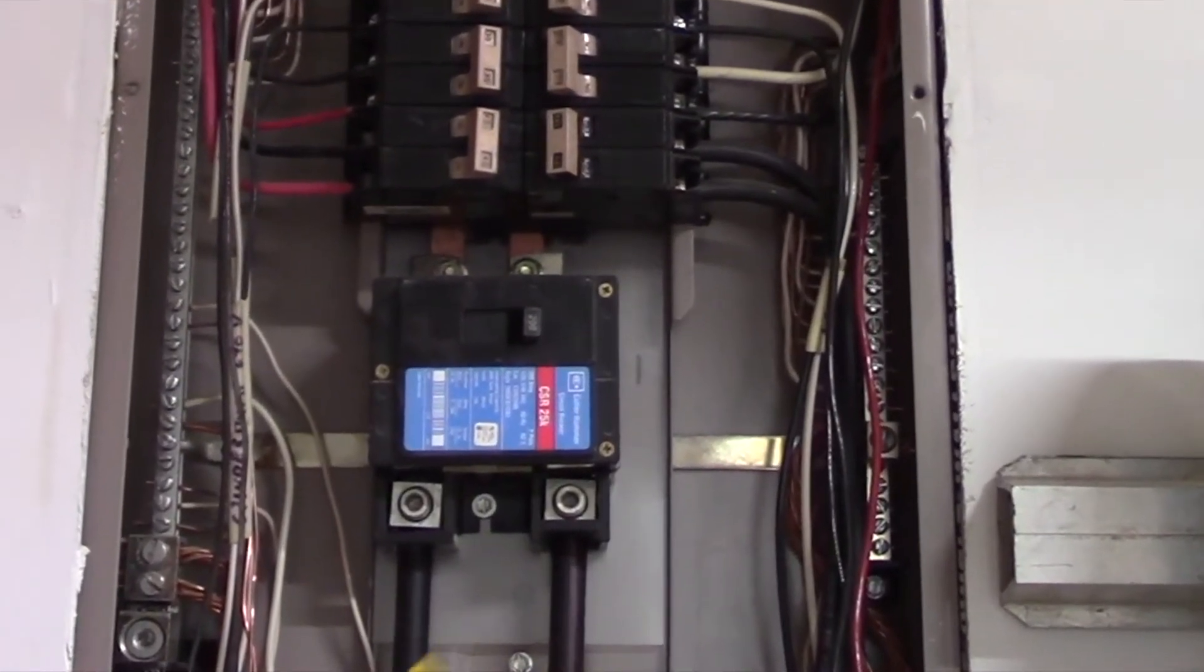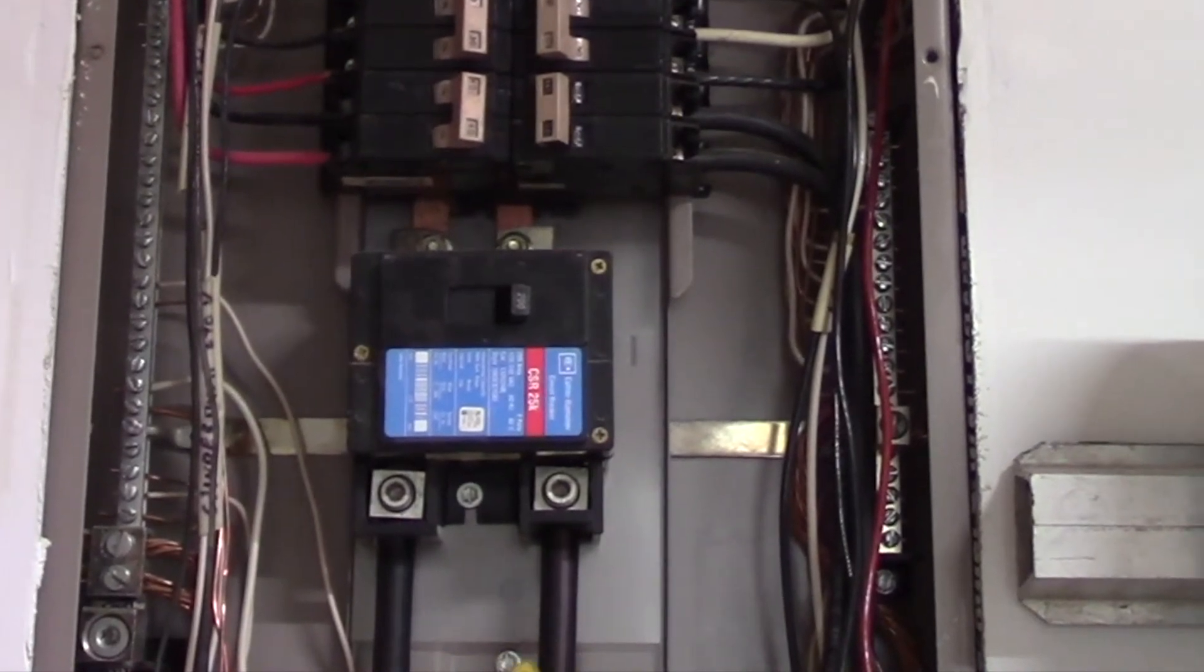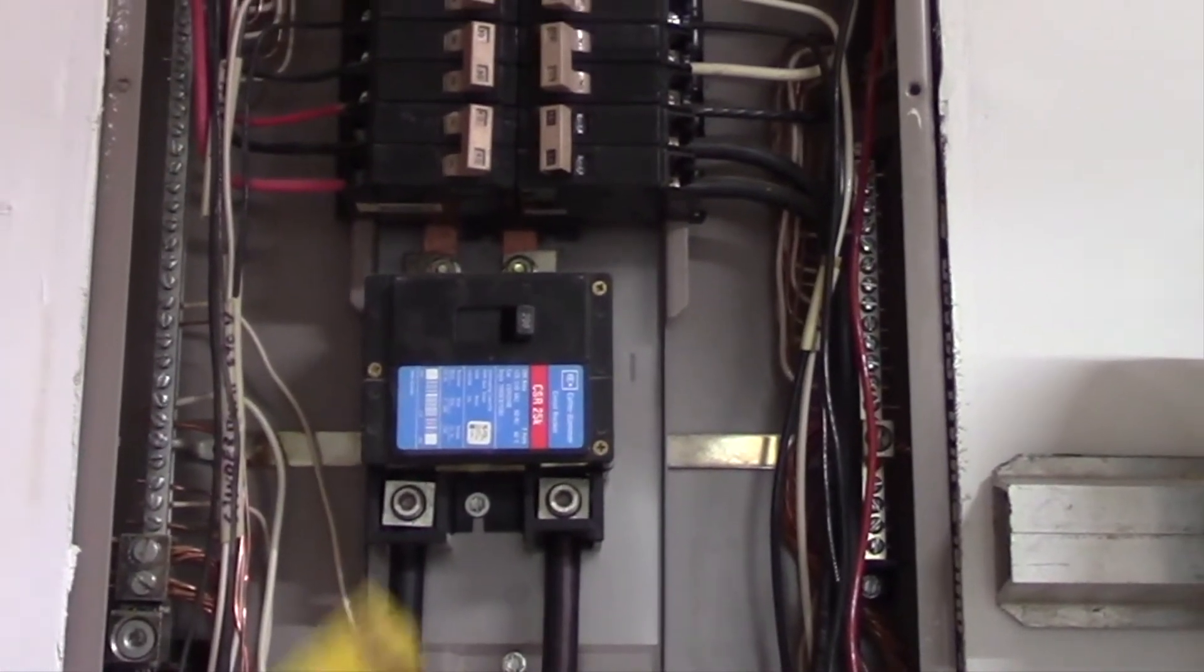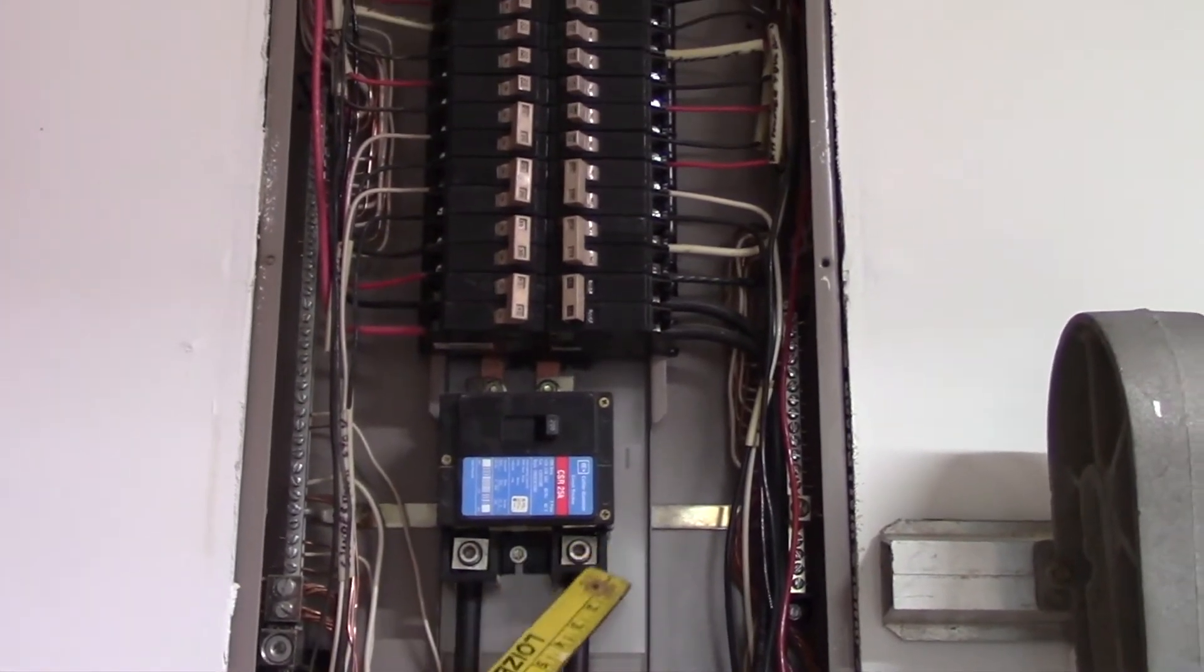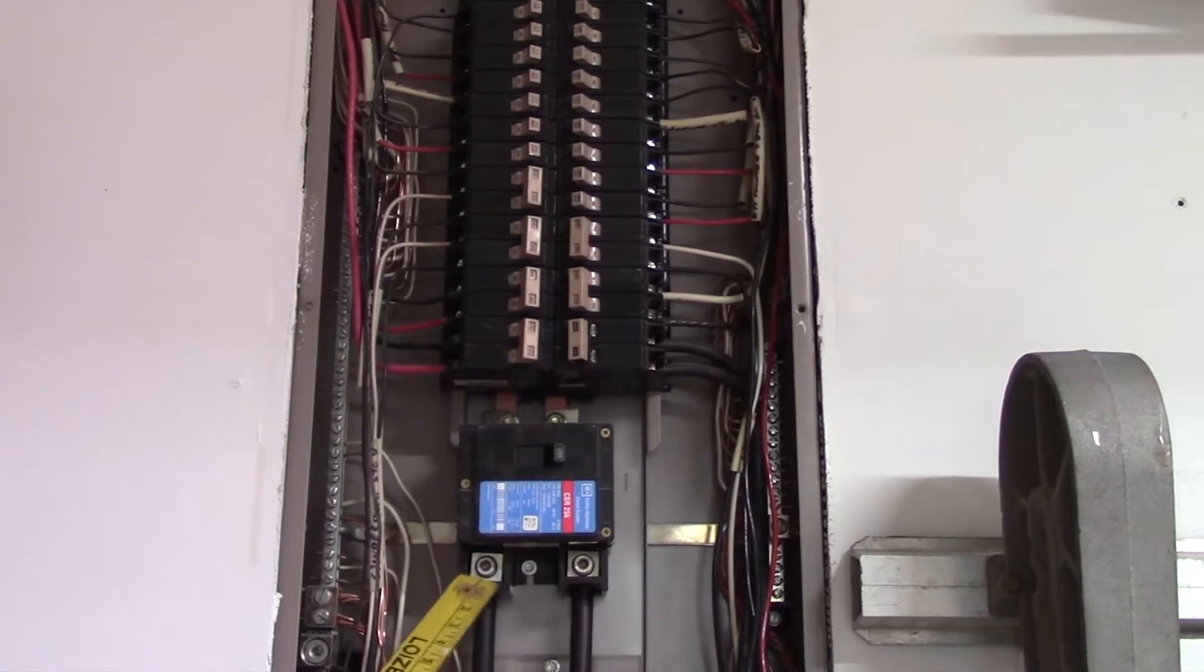These two wires here are the heavy wires that bring electricity into your home. Even if you shut off the main, there is still going to be electricity coming to these two terminals. There's no way to shut that off without removing the meter.